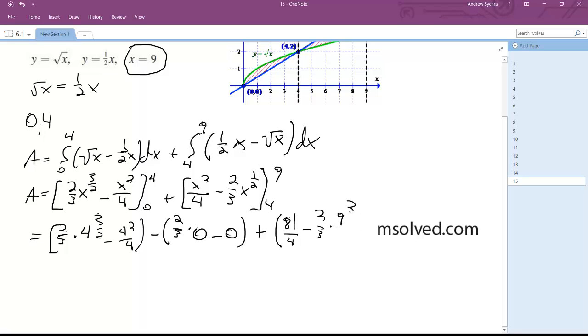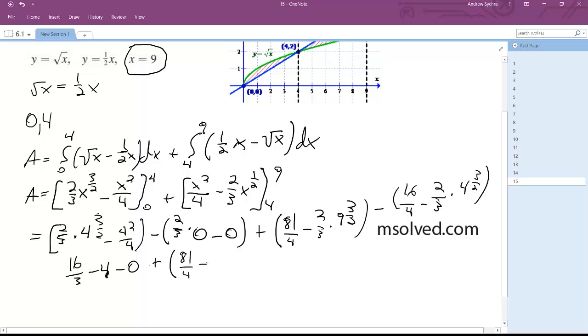Minus 3 halves minus 6 thirds minus 4 minus 0 plus 81 over 4 minus 18 minus quantity 4 minus 16 thirds.